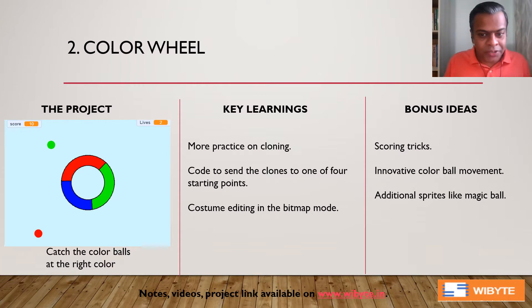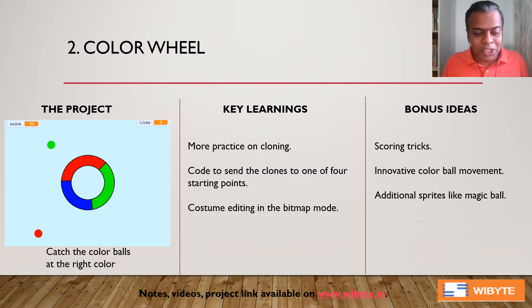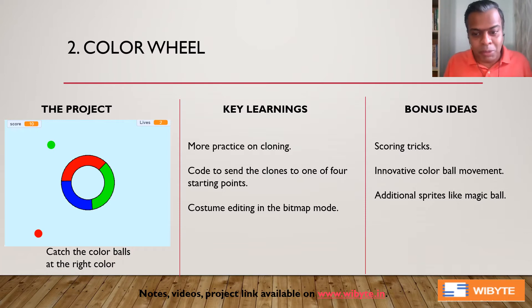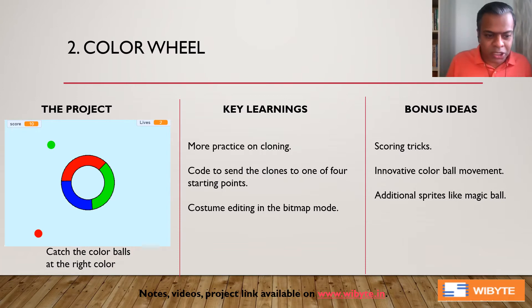We also learn how to edit costumes in bitmap mode — for example, the color wheel itself can be developed entirely in Scratch using the bitmap editor, which is quite beautiful. For bonus ideas, you can add scoring tricks where different colored balls give different points, or the game changes so that red must be caught on green and green on red. You can make ball movement more deceptive, add a magic ball that can be touched anywhere, or a magic area on the wheel that accepts any color.